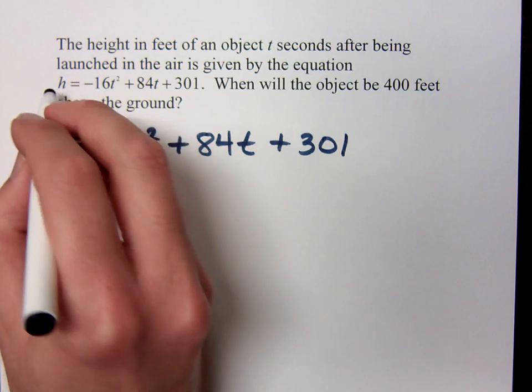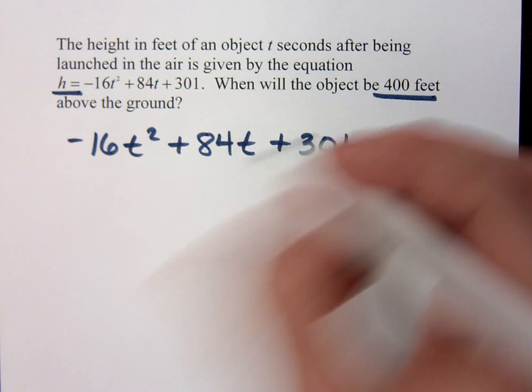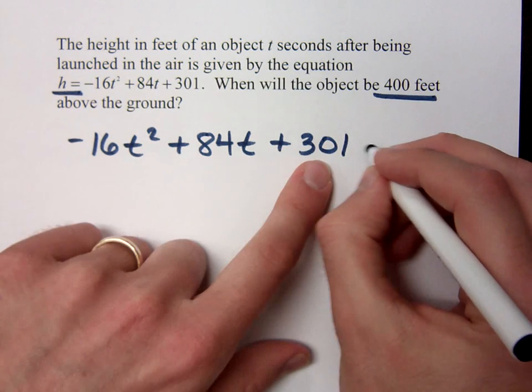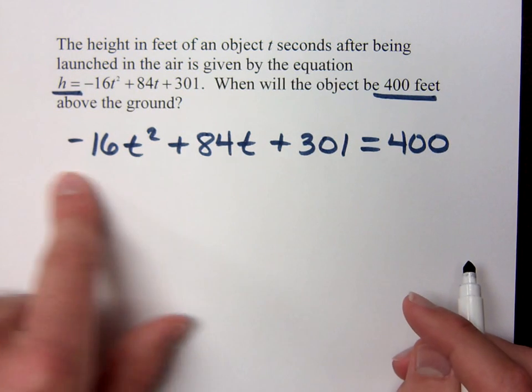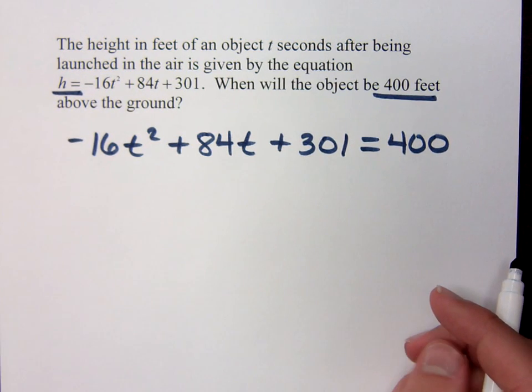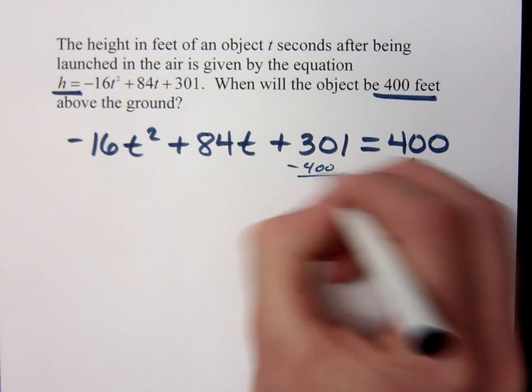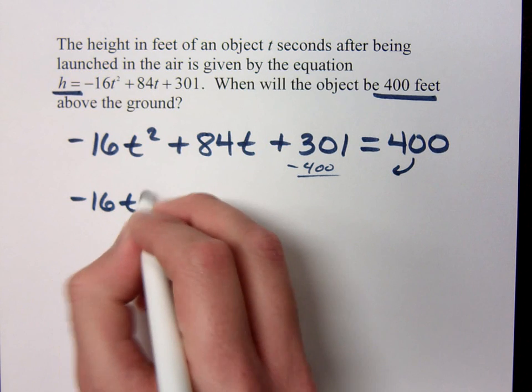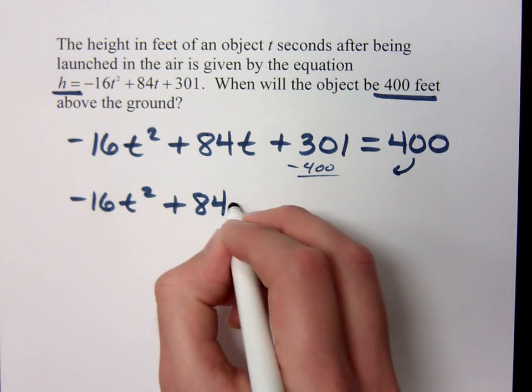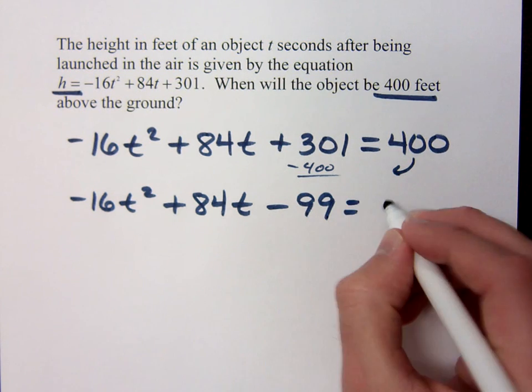Now, this is equal to the height, but we want to know specifically when will the object be 400 feet above the ground. So that means when will this expression for height equal 400. And what you see is that we have something here that's quadratic. So let's get everything to one side and zero on the other. If I subtract the 400 to the other side, I end up with -16t² + 84t. This gives me -99 is equal to zero.